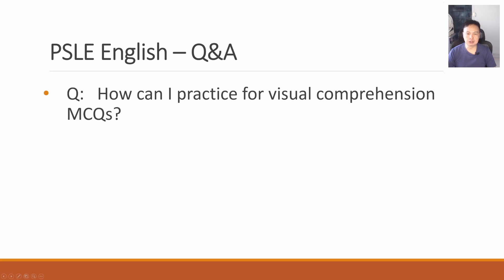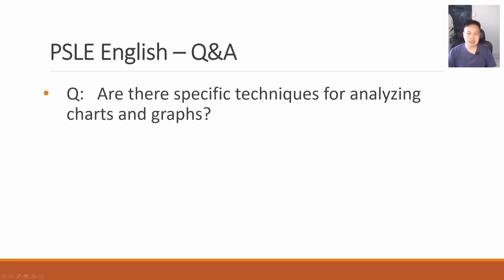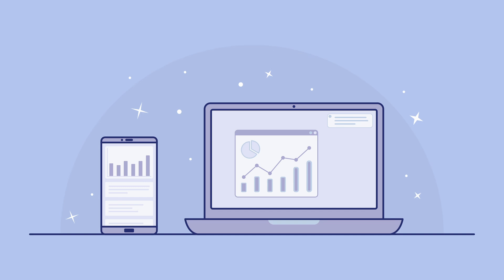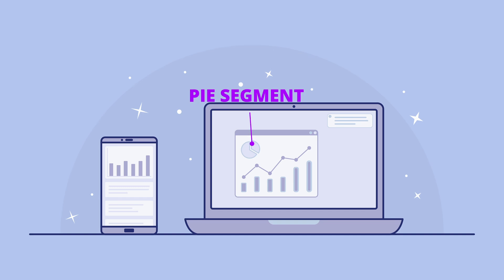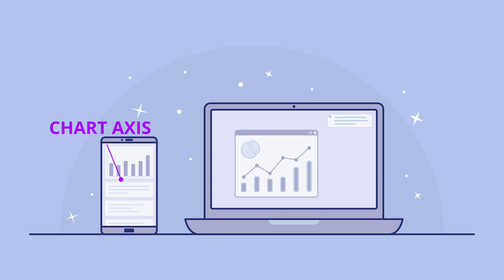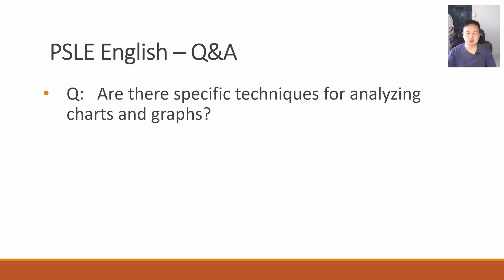How can I practice for visual comprehension MCQs? Get your hands on as many practices as you can and just complete them. For specific techniques when analyzing charts and graphs: if you are presented with charts, graphs, or maps, pay attention to the headings and sub-headings. For a pie chart, pay attention to the different parts. For a graph, pay attention to the axes themselves. That is how you draw meaning from all these diagrams.